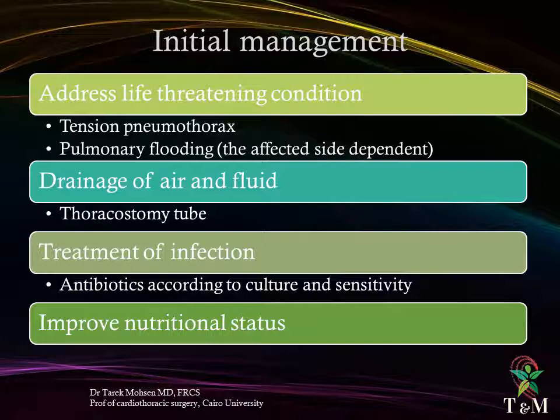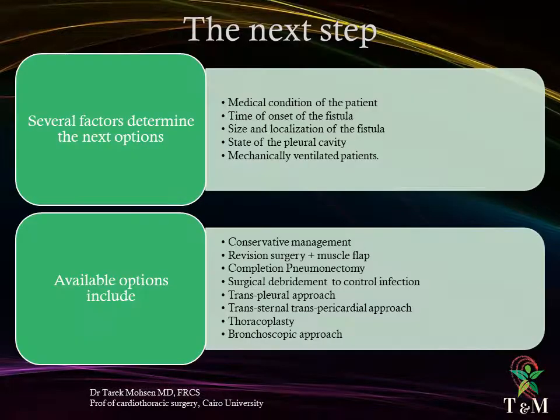The initial management of bronchopleural fistula is to address life-threatening conditions like tension pneumothorax, respiratory failure, and pulmonary flooding from the fistula cavity to the normal lung. In such cases, the affected side should be dependent, with drainage of air and fluid achieved through chest tube. Treatment of infection using targeted antibiotics according to culture and sensitivity is essential, and nutritional status attention is paramount.